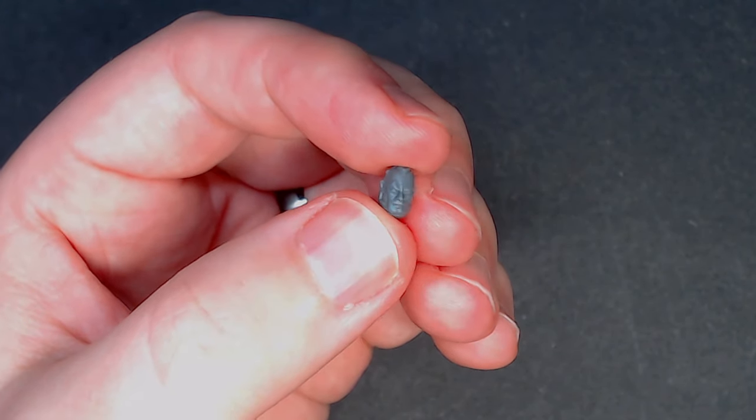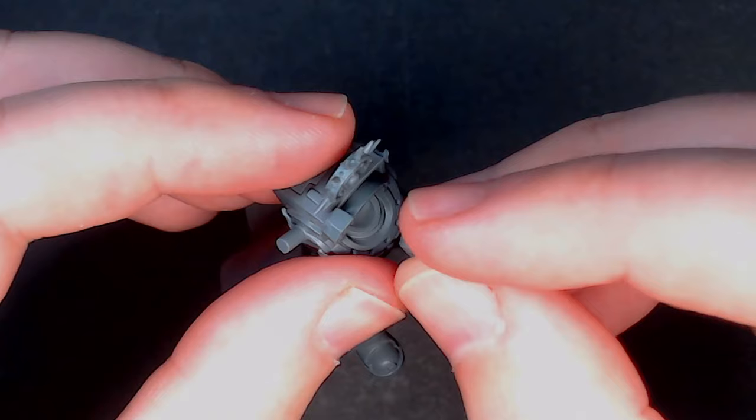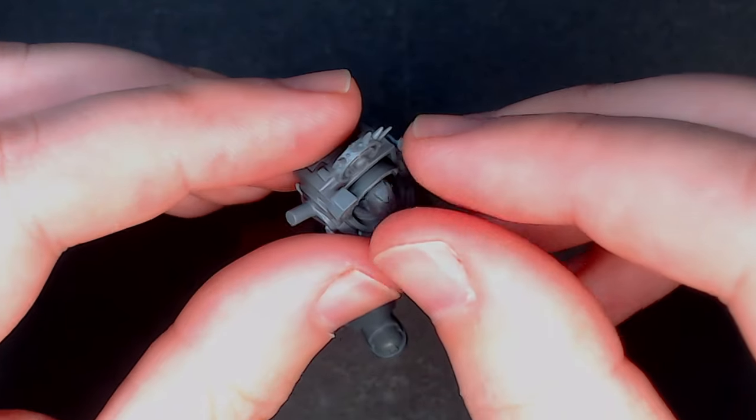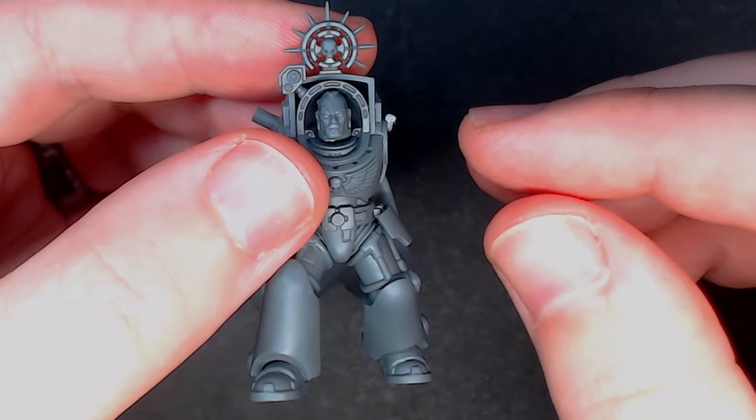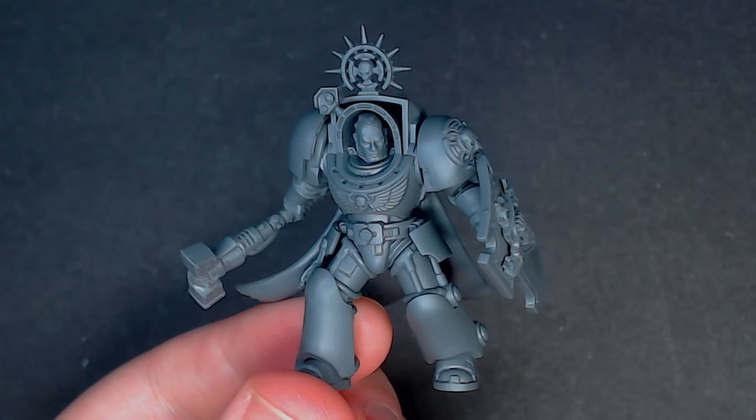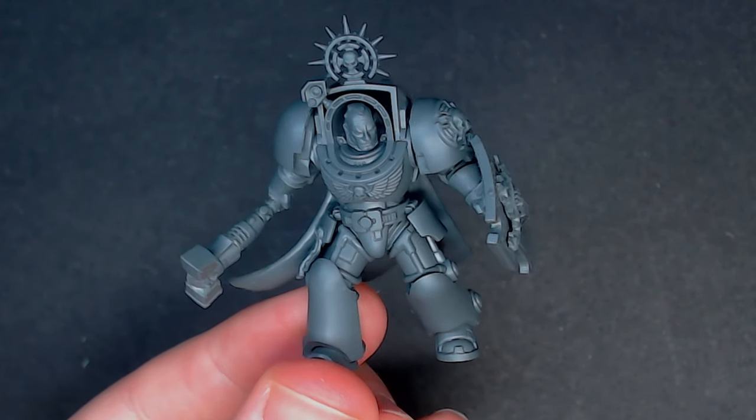For the head I just used a simple Primaris Intercessor head, the one with the little mohawk in the middle and just cut the neck nub off so that it fit flush against the neck recess of the torso. I did actually do a little bit of green stuff on this later on. I did this little soul patch however I didn't record it because I'm an idiot. You'll see it later on though.